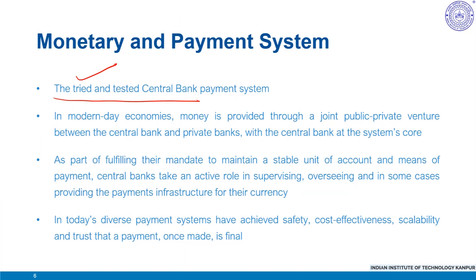In almost all modern-day economies, money is provided through a joint public-private venture between the central bank and private banks, with the central bank at the core. Often electronic bank deposits are the main means of payment between ultimate users, while central bank reserves are the means of payment between banks. In this two-tiered system, trust is generated through independent and accountable central banks, and the trust in bank deposits is generated through regulation, supervision and deposit insurance schemes.